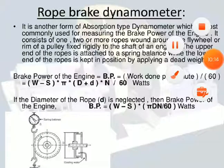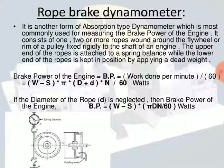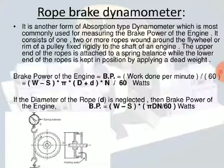The rope consists of one, two, or more ropes wound around the flywheel. The upper end of the rope is attached to a spring balance, while the lower end is kept in position by a dead weight to maintain equilibrium. In operation, the engine is made to run at a constant speed, and the frictional torque due to the rope must be equal to the torque being transmitted by the engine.